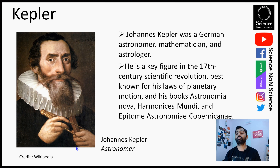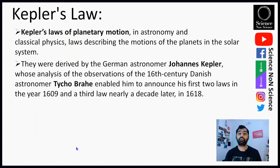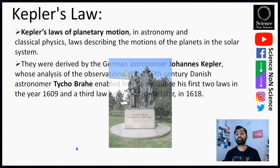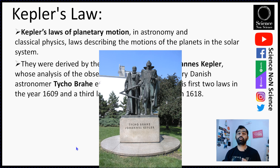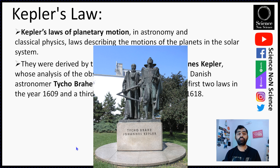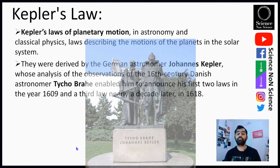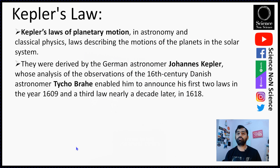Kepler is best known for his laws of planetary motion and several of his books. He gave three laws of planetary motion in astronomy and classical physics. These laws were derived by Kepler whose analysis of the observations of 16th century Danish astronomer Tycho Brahe enabled him to announce his first two laws in 1609, and the third law nearly a decade later in 1618. We'll give special focus to this third law.